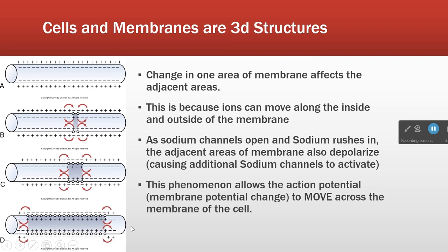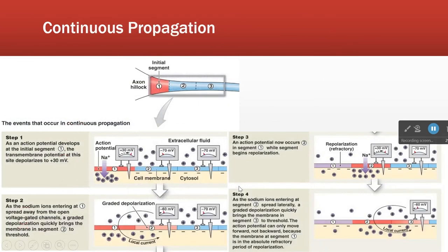In an actual axon, we don't want signals going in two different directions at once — we want it all to go in one direction. We have a system for that. But this is showing you how membrane potential change can propagate.